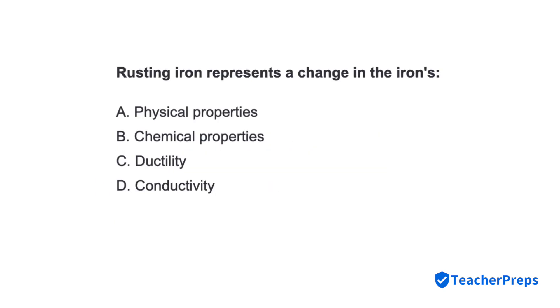Rusting iron represents a change in the iron's — correct response letter B — chemical properties.